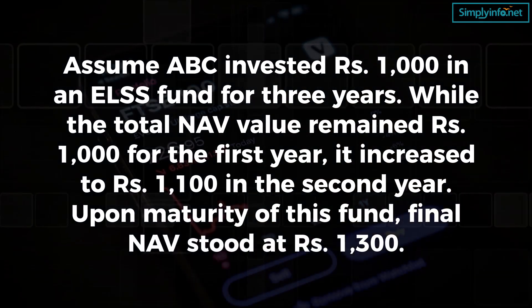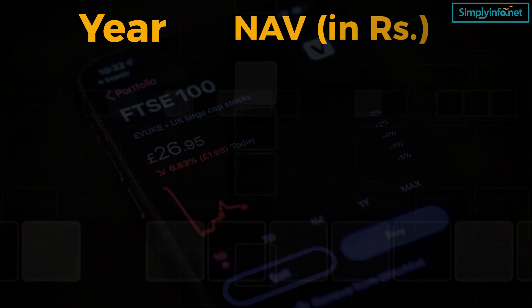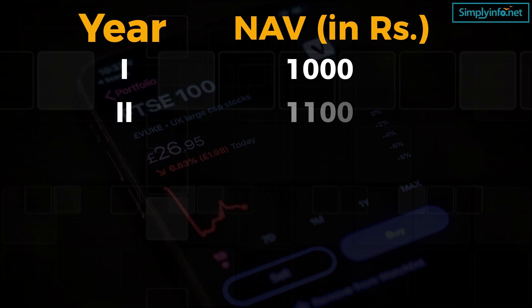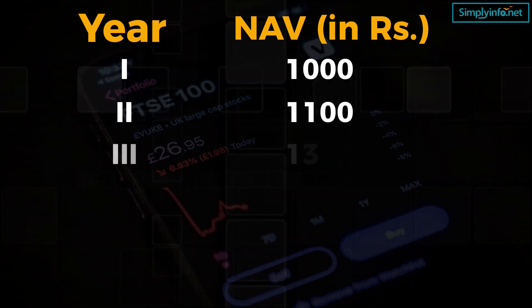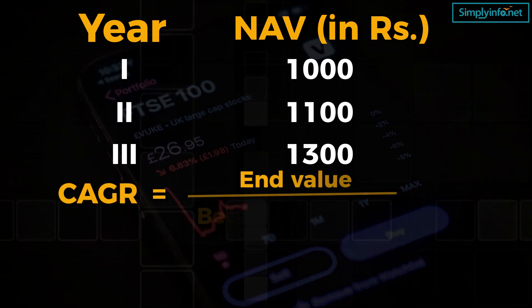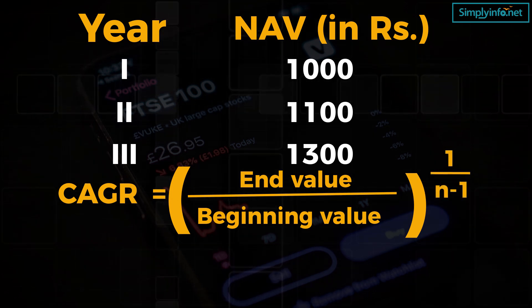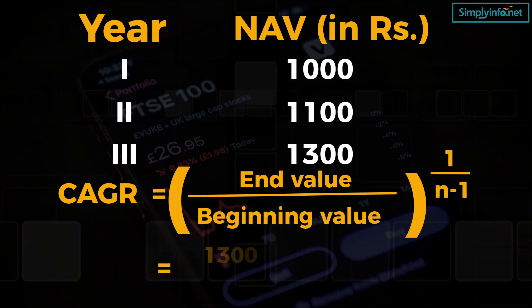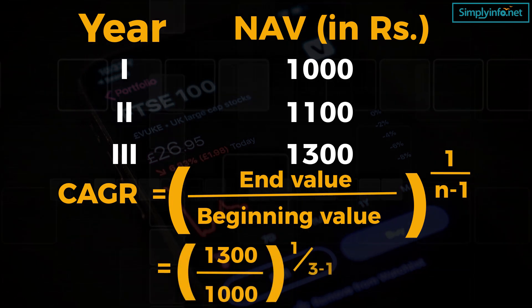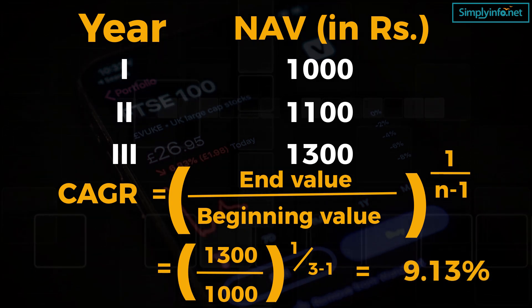Upon maturity, the final NAV stood at rupees 1300. Year one: 1000; year two: 1100; year three: 1300. Therefore, CAGR = (end value / beginning value) to the power of (1/n) minus 1, which is equal to (1300 / 1000) to the power of (1/3) minus 1. The CAGR value is equal to 9.13 percent.